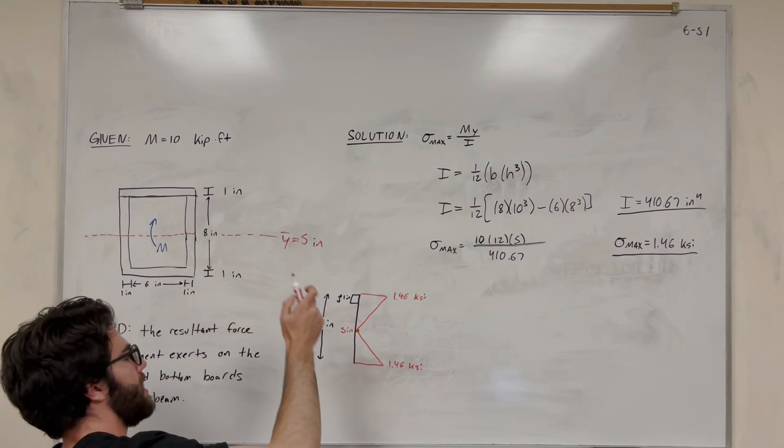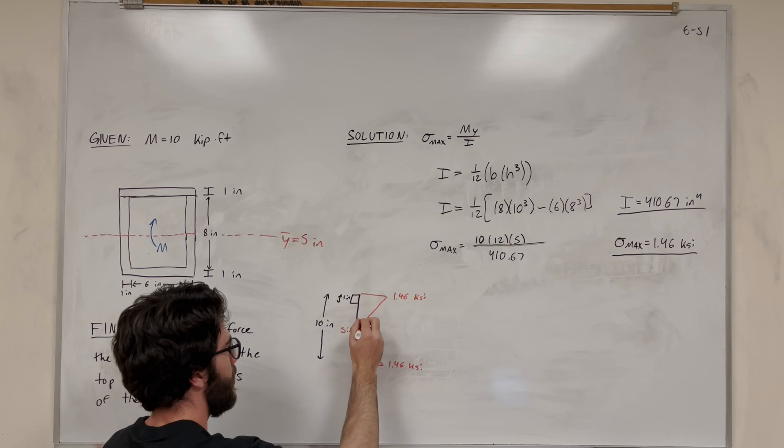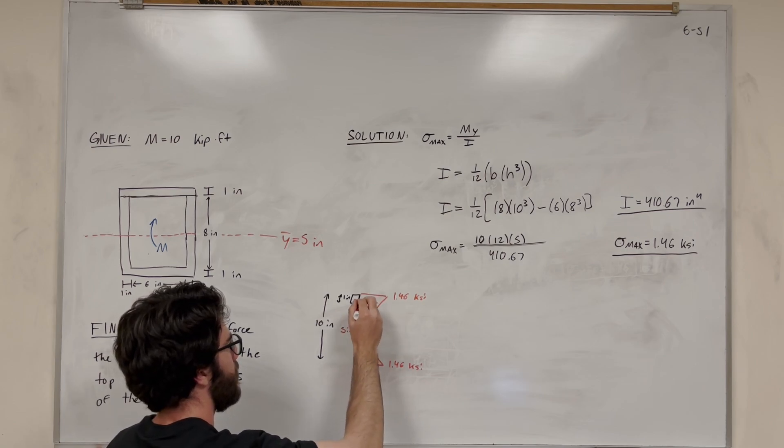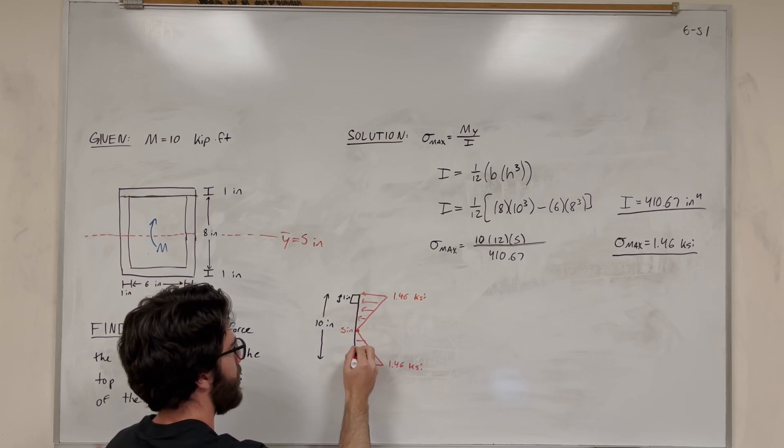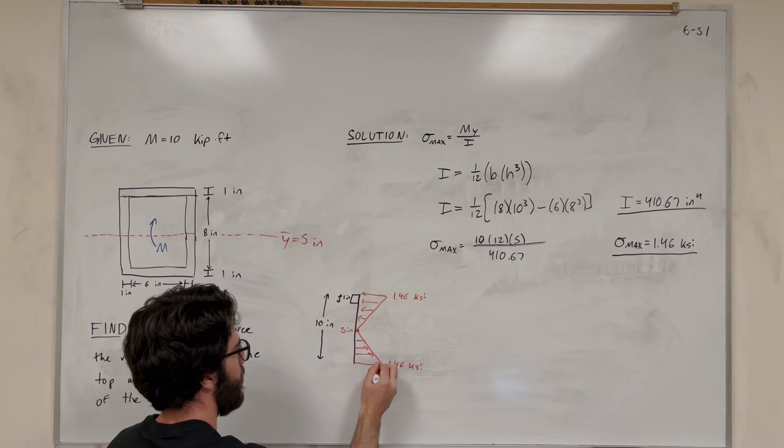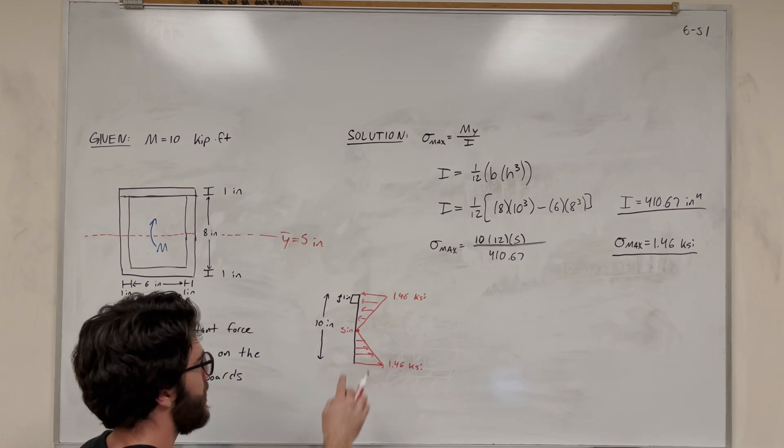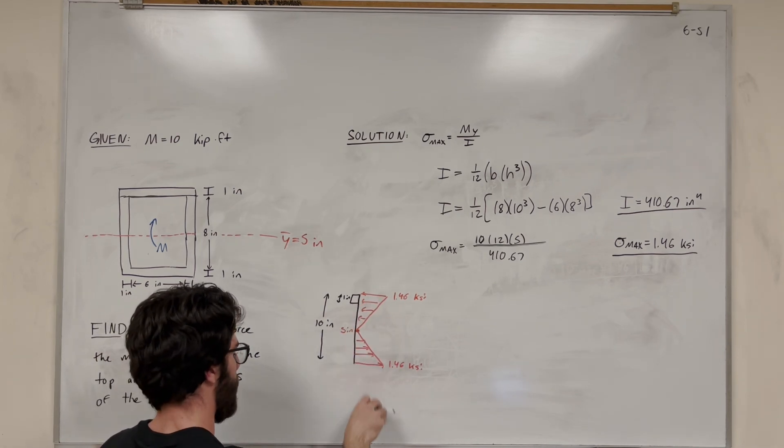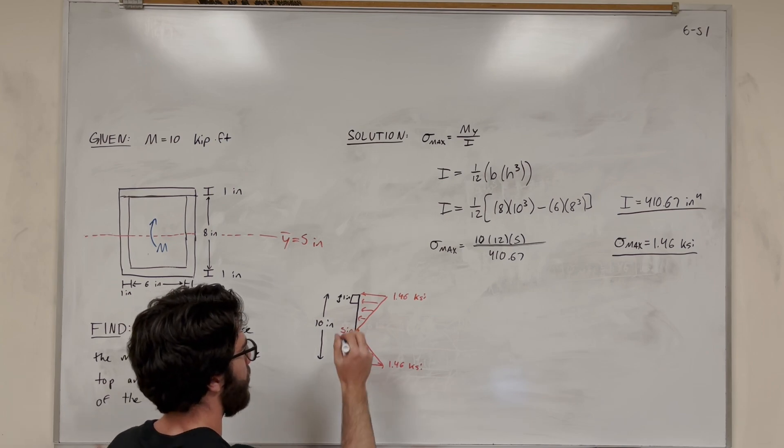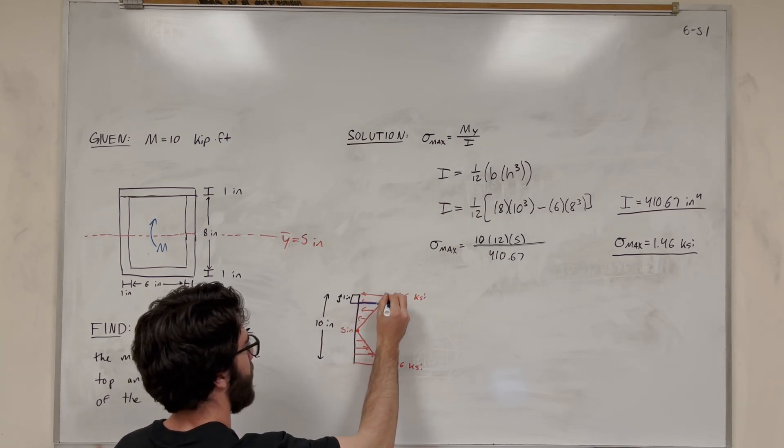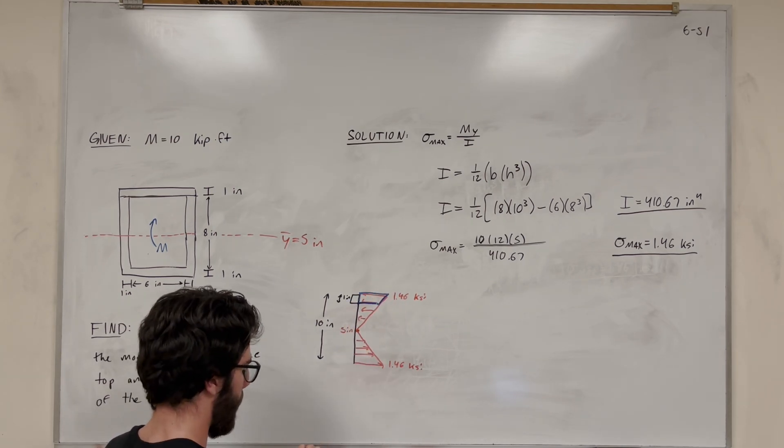Now, because the moment points upward, it's compressing the top. So the top is in compression, and the bottom is in tension, pointing outward like this. Basically what we're trying to do is we want to find the force in just this section. Let me circle that in blue. We have this shape here.